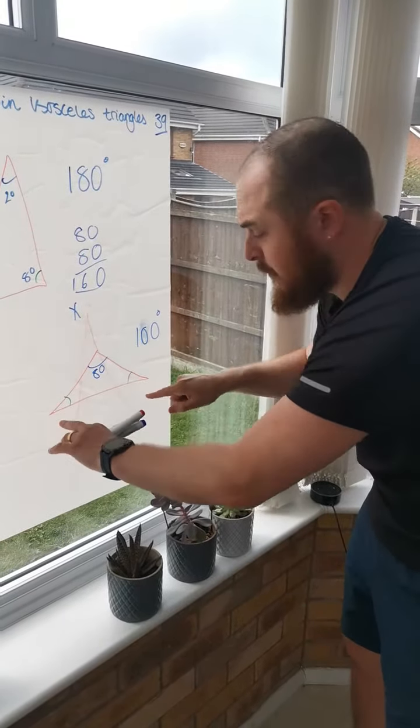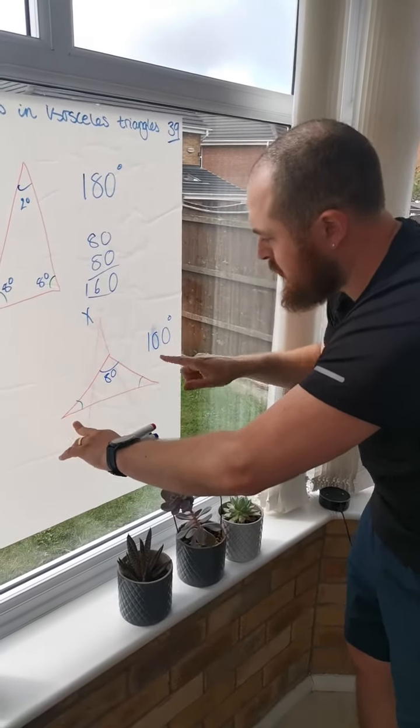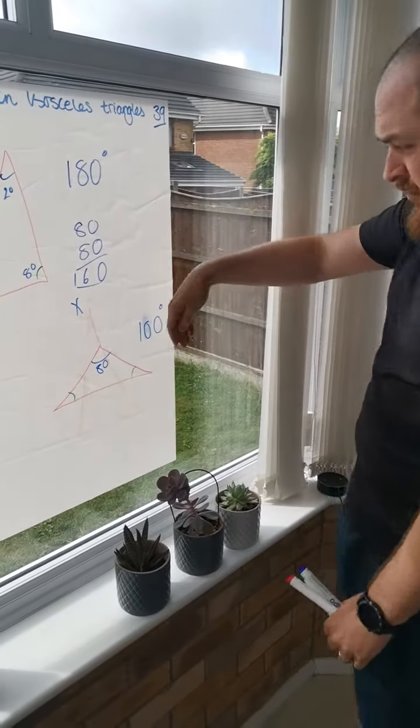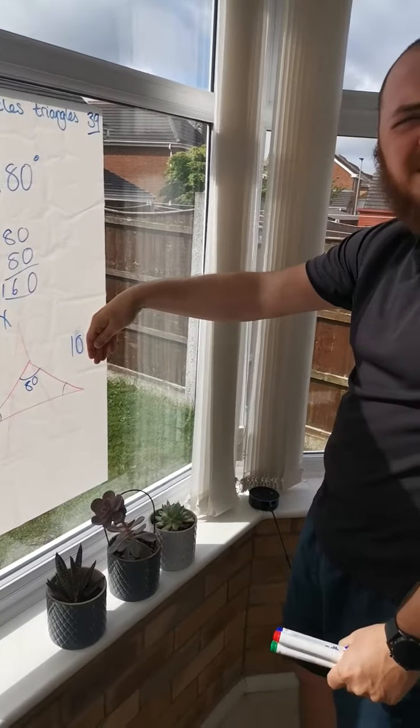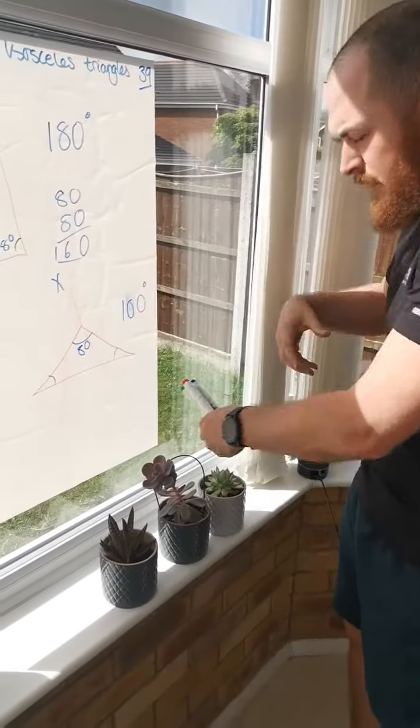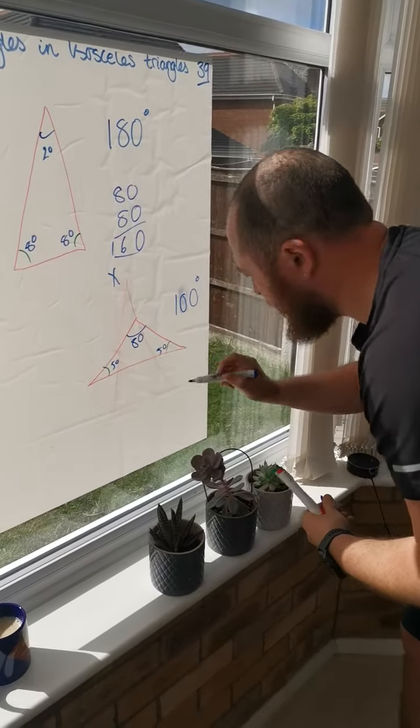Because remember, in an isosceles triangle, these two angles are the same. Same angles. So, it would be 100 divided by 2. Could take a zero off. 10 divided by 2 is 5. Add my zero, brings it back to 50, which would make this angle 50, this angle 50.